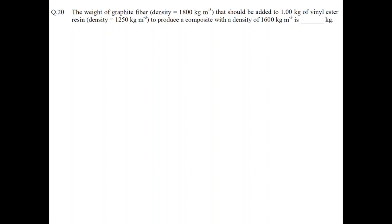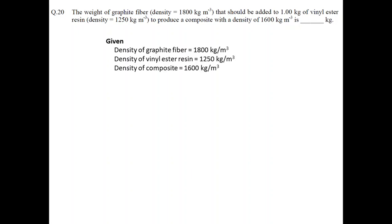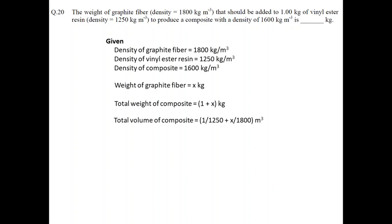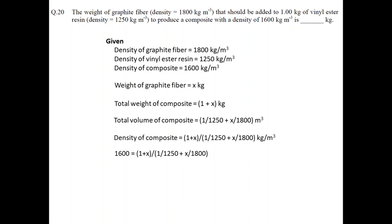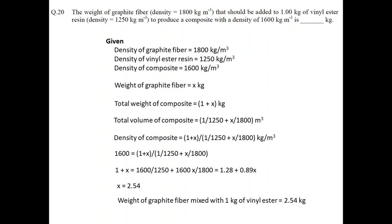This is a relatively simple question. We need to find the weight of fiber to be mixed with 1 kg of phenyl ester to prepare a composite with a density of 1600 kg/m³. Densities of fiber, resin, and composite are given. Letting x kg of fiber be mixed with 1 kg of ester, the volume of fiber and ester in the composite equals mass divided by respective densities. Setting the composite density equal to 1600 and simplifying, we find x = 2.54. So 2.54 kg of fiber must be mixed with 1 kg of resin to achieve a density of 1600 kg/m³.